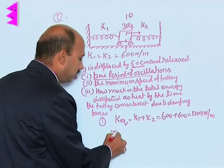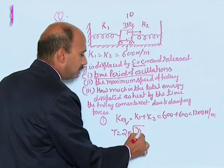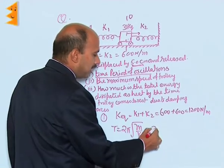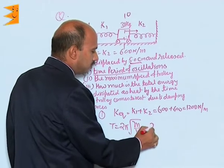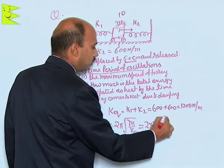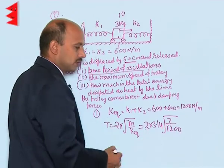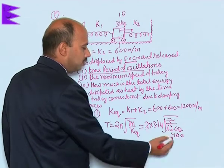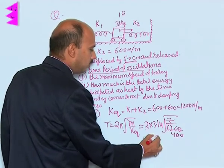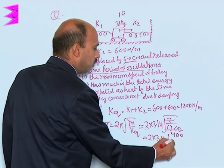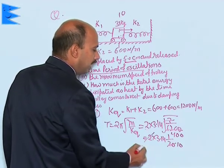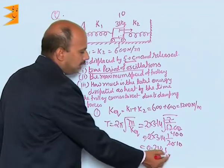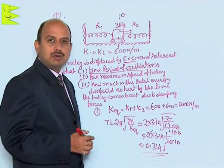Now we have to get time period. T is equal to 2 pi under root of m upon k equivalent. We will be getting 2 into 3.14 under root of 3 upon 1200. This you will be getting 400, square root is here 20. 3, 2 into 3.14, 1 upon 20. This is here 10 and you will be getting 0.314 second. The time period of oscillation is 0.314 seconds.